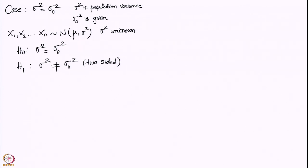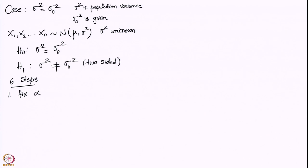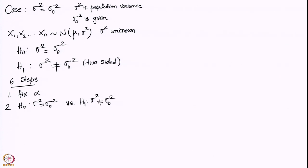Let us follow the six steps of hypothesis testing. Step one: fix alpha. Step two: clearly write the null hypothesis, sigma-square equals sigma-naught-square, versus the alternative hypothesis H1: sigma-square is not equal to sigma-naught-square.